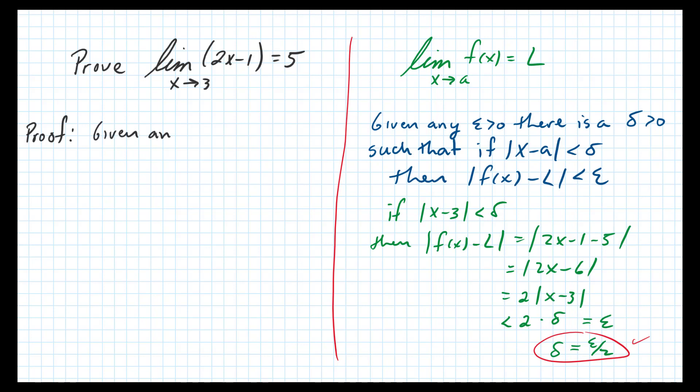Given any epsilon greater than 0, we're going to choose delta to be equal to epsilon over 2, because we already did the discovery part. So that if x minus 3 is less than epsilon over 2...